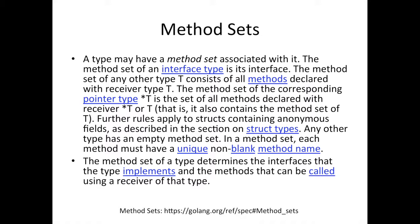The method set of an interface type is its interface. That simply means when you define an interface, the methods you declare in it are the method set for that interface. You can't go and implement methods that receive the interface itself — you do receivers on the types that implement the interface. So for example, if our interface duck has waddle and quack, those are the method sets for that interface.